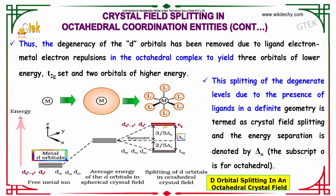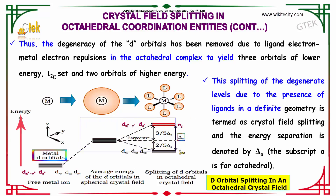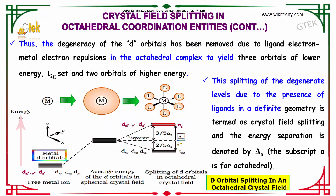The splitting of the degenerate d-orbital levels due to the presence of ligands in a definite geometry is termed as crystal field splitting. The energy separation is denoted by delta nought (Δ₀), where the subscript O stands for octahedral.